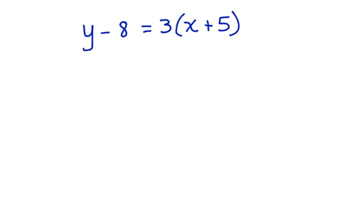y minus 8 equals 3 times the quantity x plus 5. Again, this is in point-slope form. So the first thing we're going to do is get rid of the parentheses on the right side of the equation by using the distributive property.